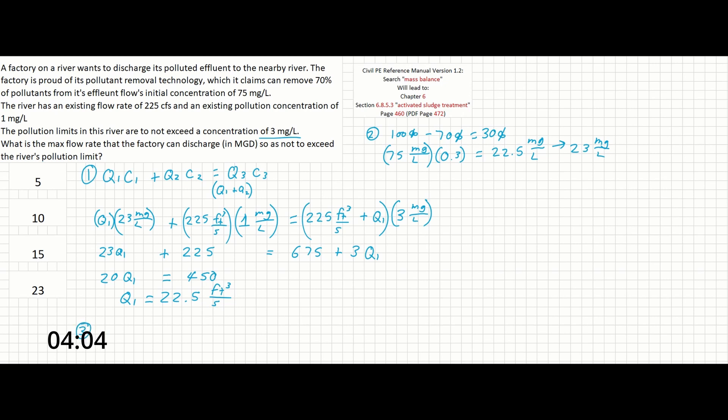And finally, since the problem asks us for units of MGD, we have to convert our answer. So 22.5 cubic feet per second times 7.48 gallons per one cubic foot times 60 seconds in one minute times 60 minutes in one hour times 24 hours in one day times one MGal over 10 to the 6 gallons. These units will cancel out, and multiplying this all the way through will give us a final answer of 14.54 MGal per day.